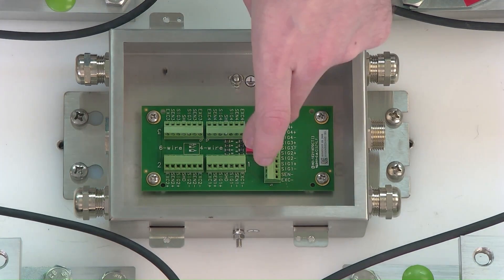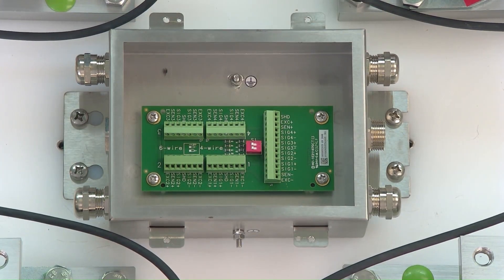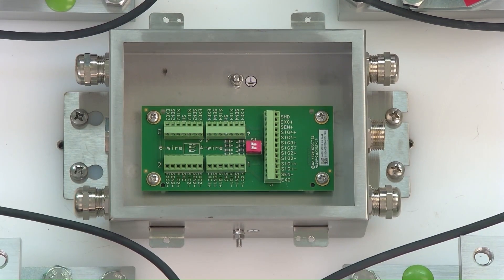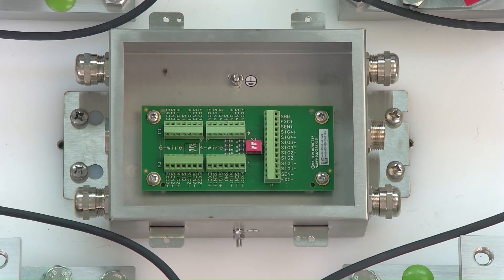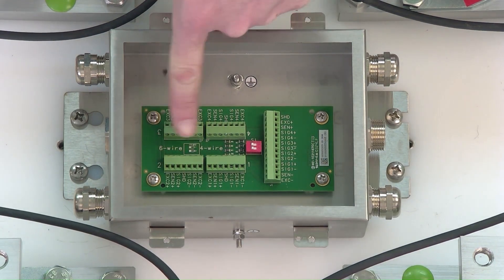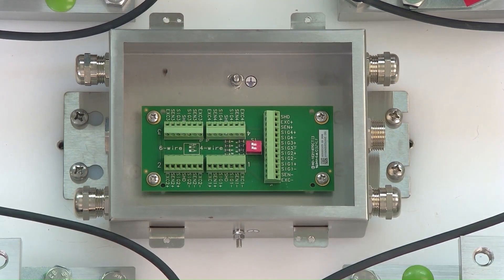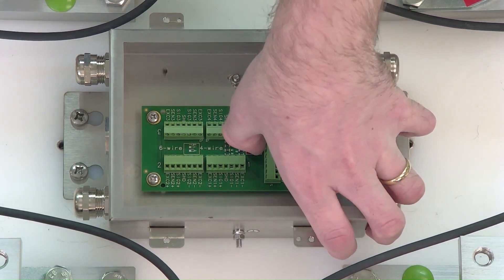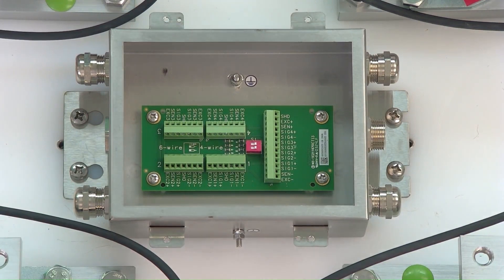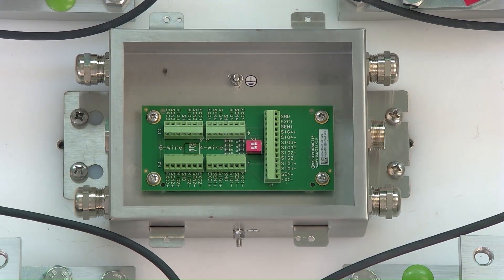We have these DIP switches here. Printed on the circuit board, it shows which way to orient those switches based on if you have a 6-wire or 4-wire load cell. These DIP switches mean you no longer need a jumper wire if using 4-wire load cells, which is the case here. It's currently configured for 6-wire, so I'm going to switch it to the other side for 4-wire. No jumper cable needed.